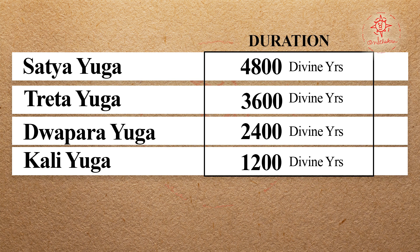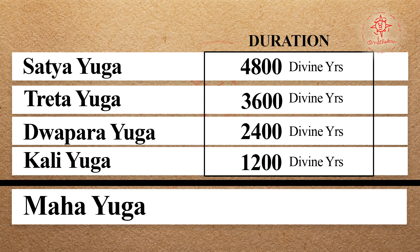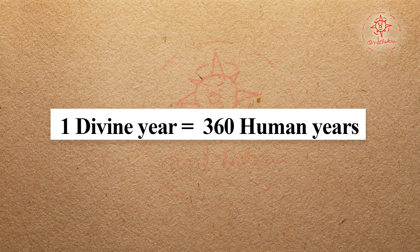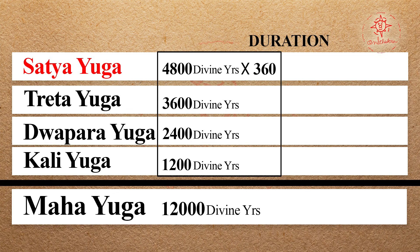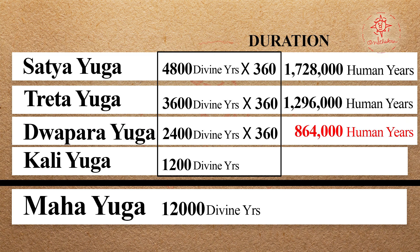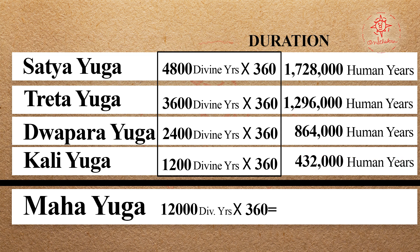These four Yugas combined are called a Mahayuga. The duration of a Mahayuga is 4,800 + 3,600 + 2,400 + 1,200, which equals 12,000 divine or celestial years. Since one divine year equals 360 human years: Satya Yuga is 1,728,000 human years; Treta Yuga is 1,296,000; Dwapar Yuga is 864,000; and Kali Yuga is 432,000 human years. The total duration of a Mahayuga is 4,320,000 human years.